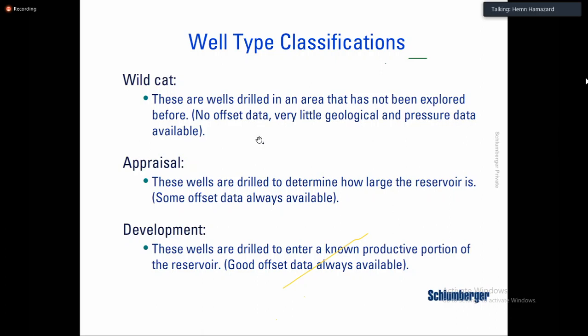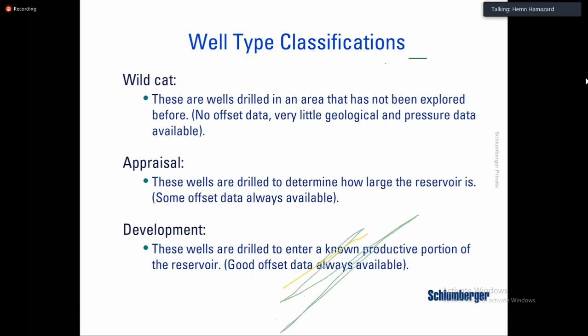Then we have another phase called appraisal wells — appraisal means assessment or evaluation wells. That means you drill the exploration or wildcat well and then you appraise how much hydrocarbons you have in that area and how much you can produce. This is the second phase of drilling. Then you have another class called development wells. Development wells means you have drilled the exploration well, produced hydrocarbons — oil and gas — and also drilled the appraisal wells, so you have a rough idea about how much hydrocarbons and how big your reservoir is.